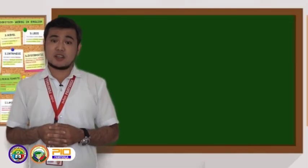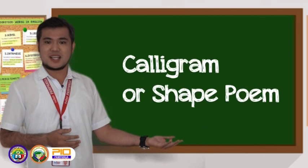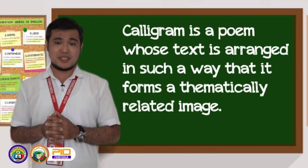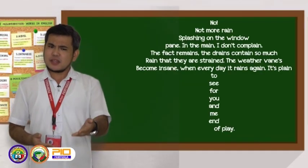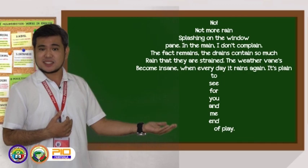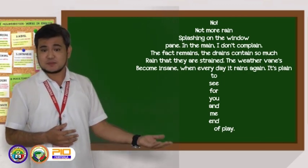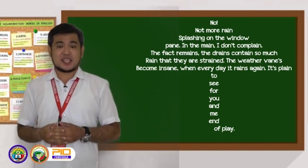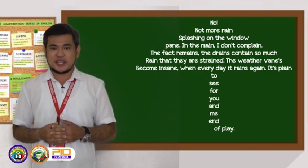The next type of poetic form is calligram, also called a shape poem. In this poem, the shape and layout of the letters and words relate to the poem's meaning. This poem takes the form of an umbrella because its subject is about rain.